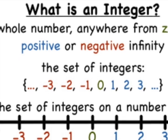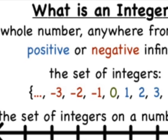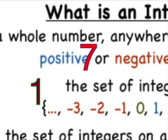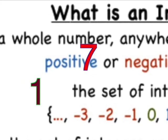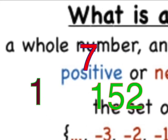An integer is a whole number. It's not a fraction. The number one is an integer. The number seven is an integer. The number 152 is also an integer. An integer can be a negative number or a positive number. So, is there such a thing as the smallest or largest integer?